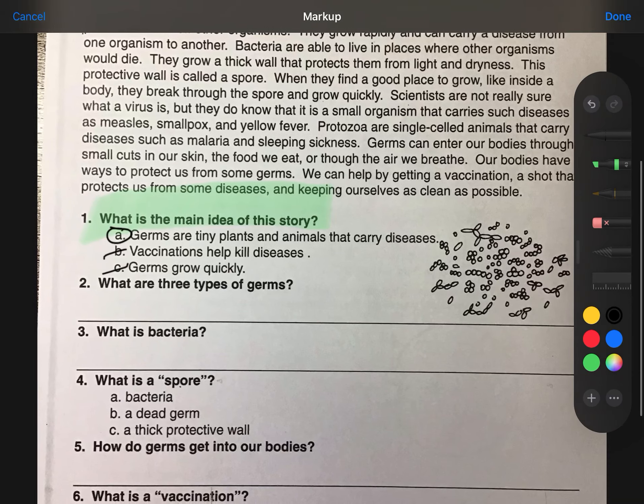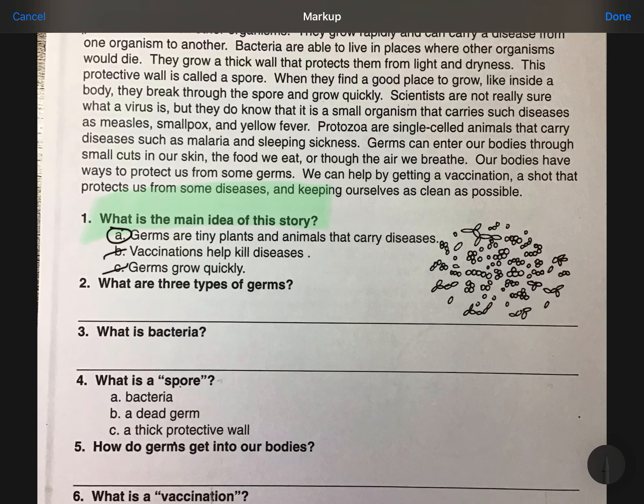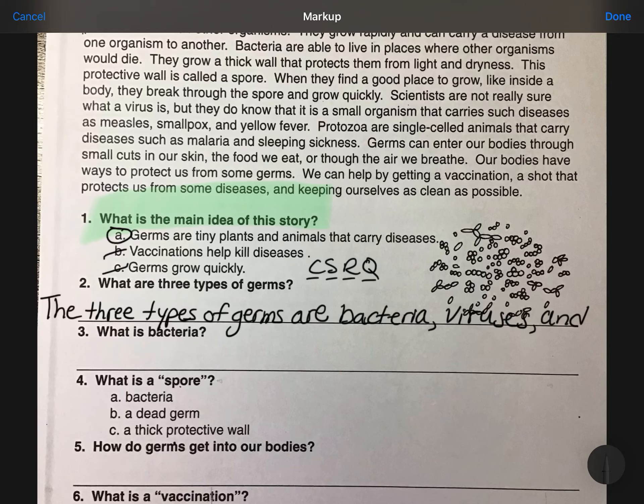So I'm going to start way over here. Hopefully I have enough room, and I'm going to get rid of this. So remember to CSRQ, which stands for complete sentence restate question. The three types of germs are bacteria, viruses, and protozoa.